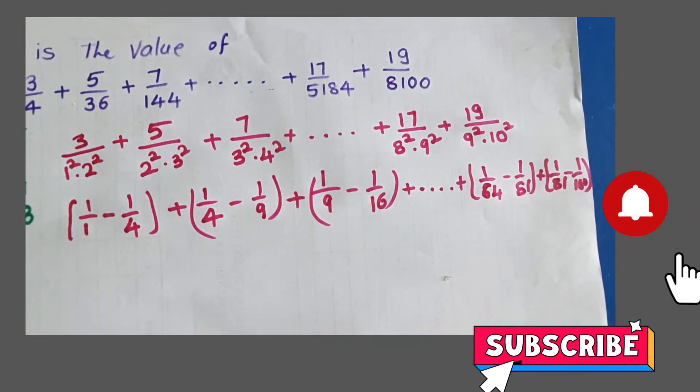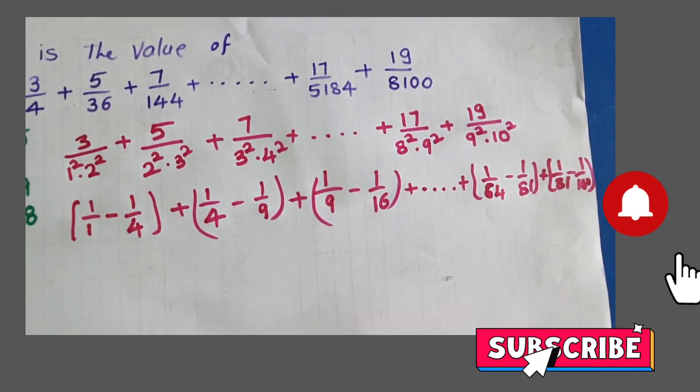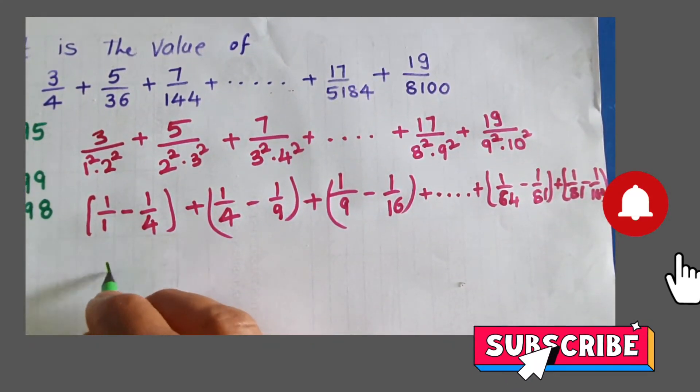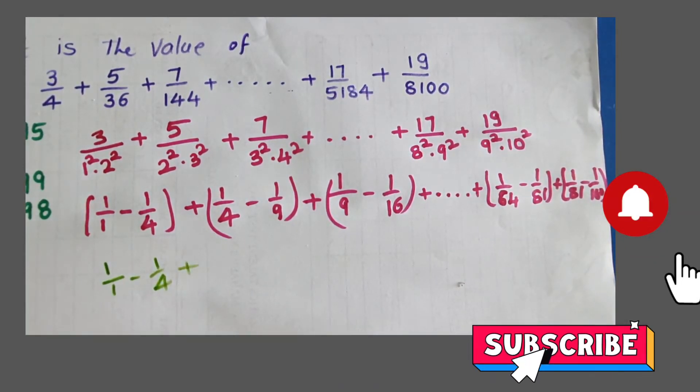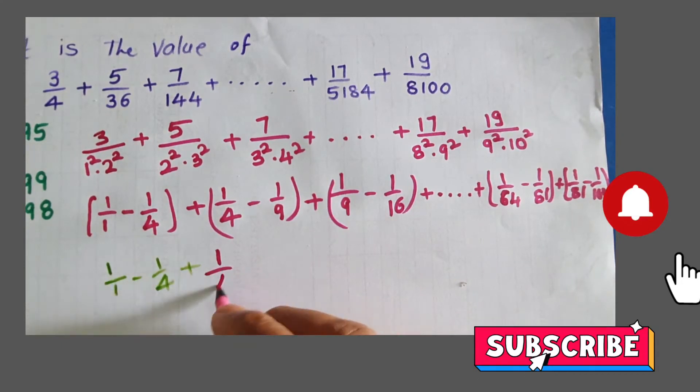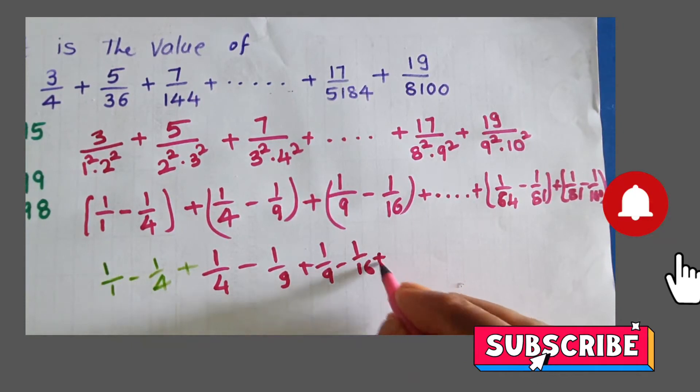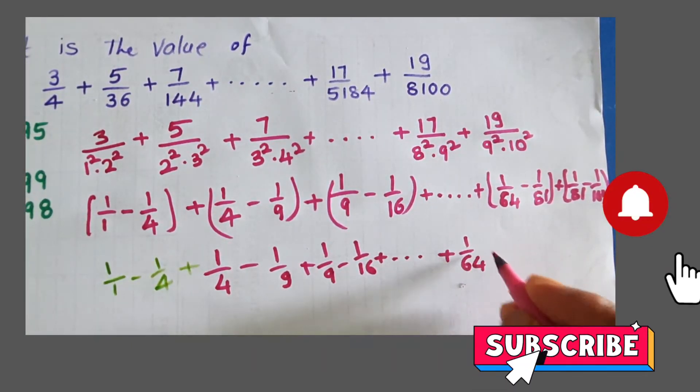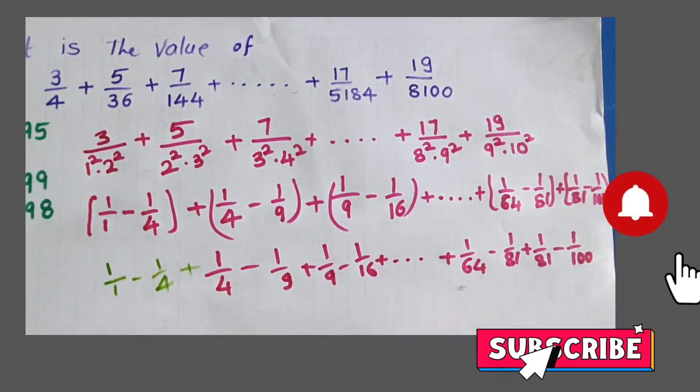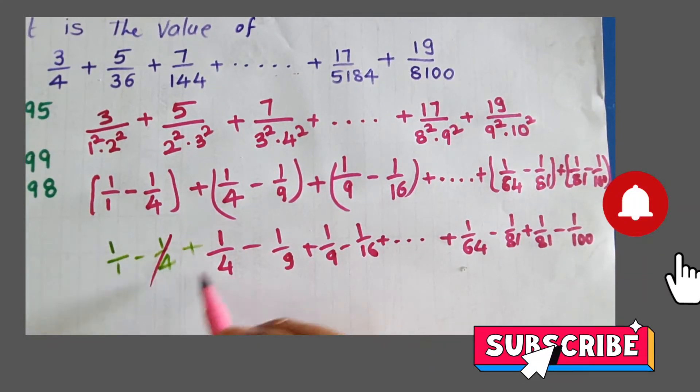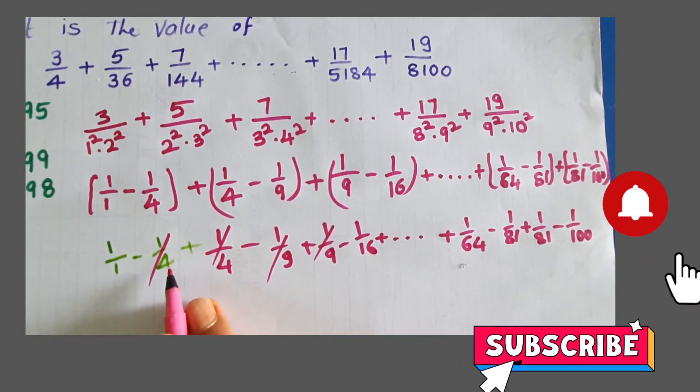Open the brackets: 1 by 1 minus 1 by 4, plus 1 by 4 minus 1 by 9, plus 1 by 9 minus 1 by 16, and so on. Then 1 by 64 minus 1 by 81, plus 1 by 81 minus 1 by 100.